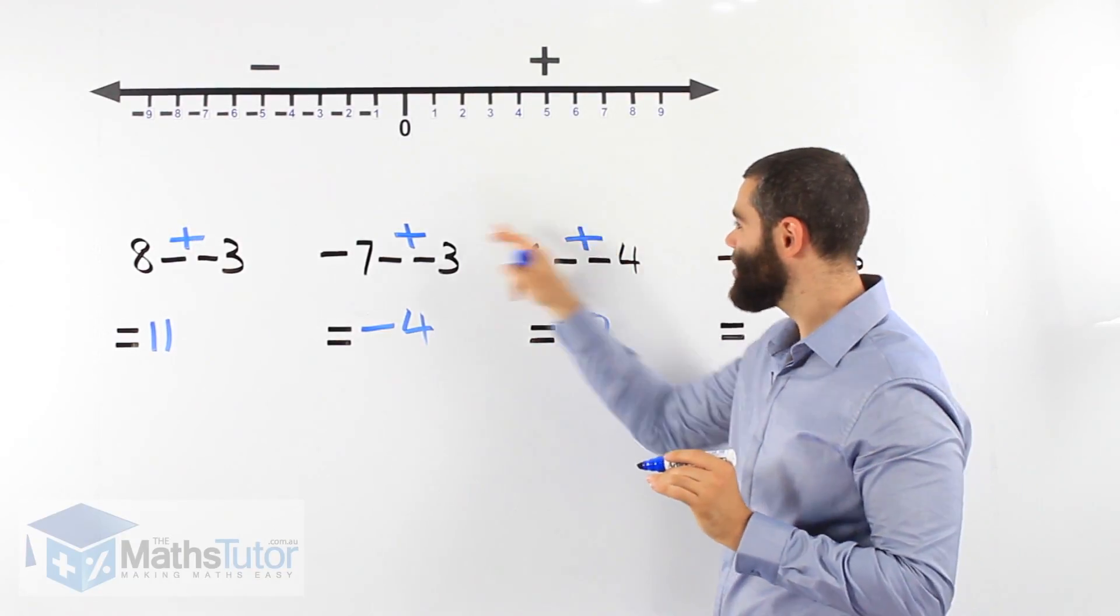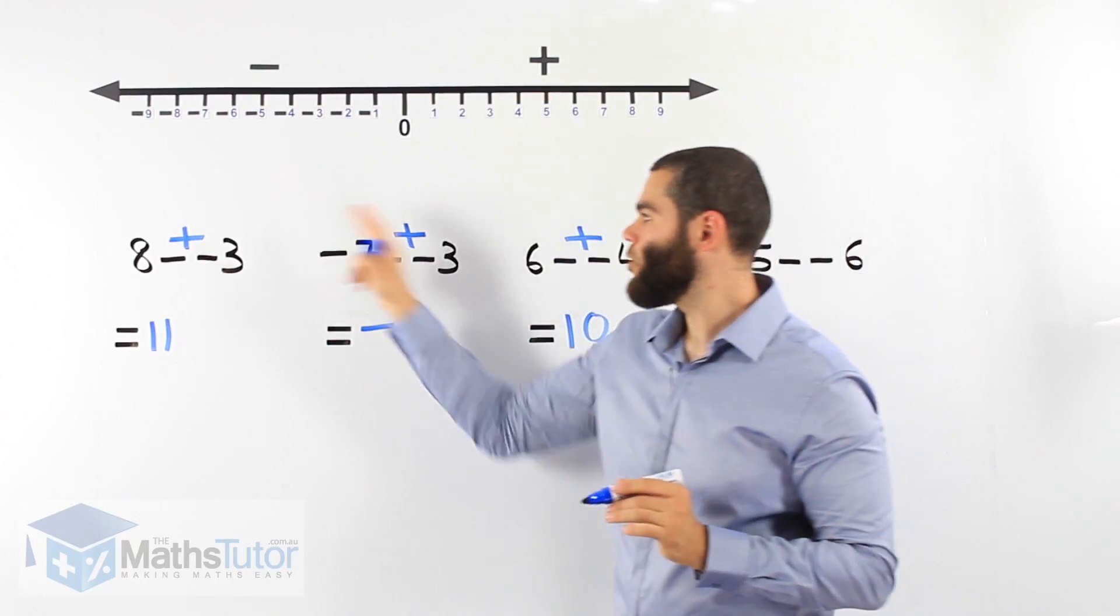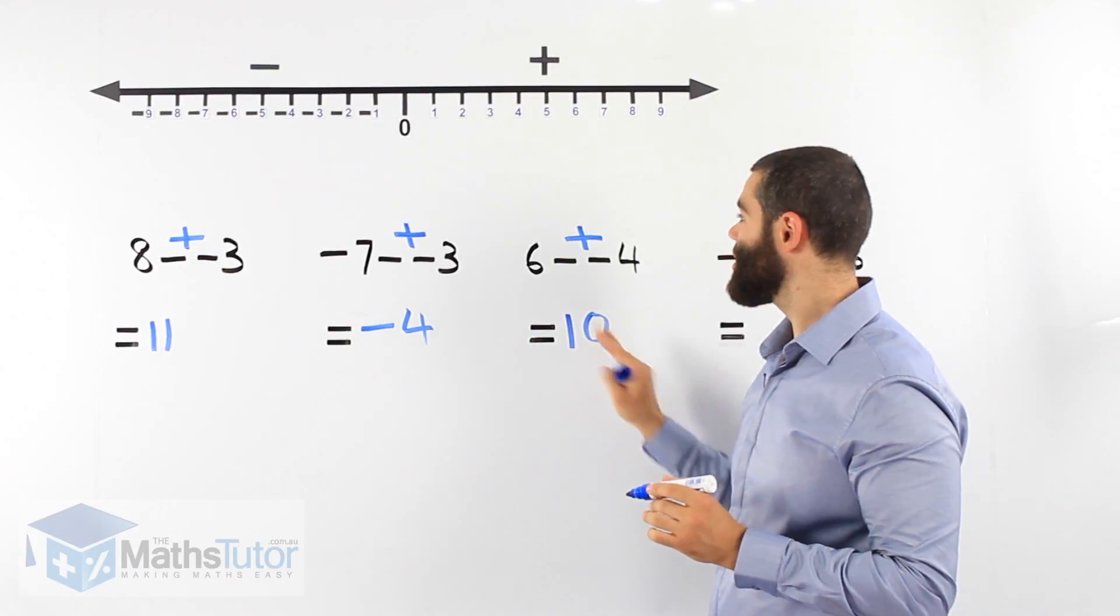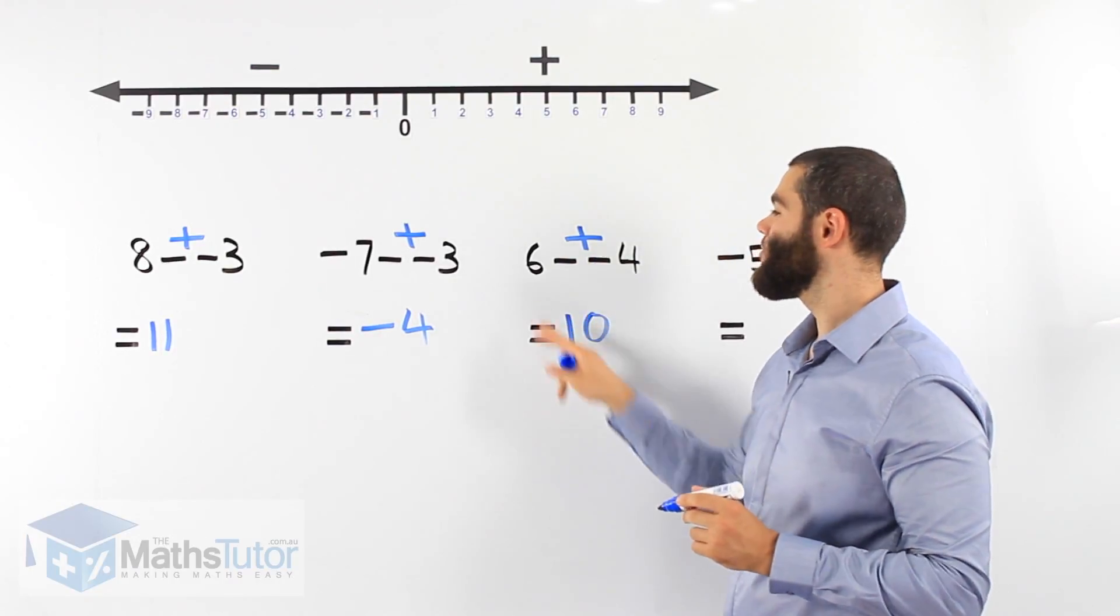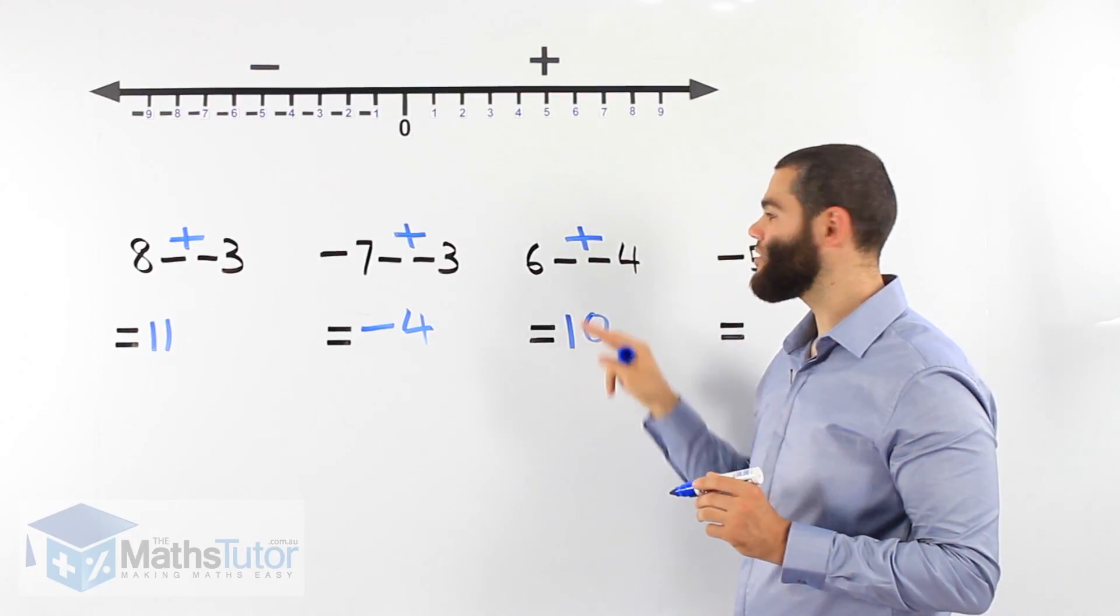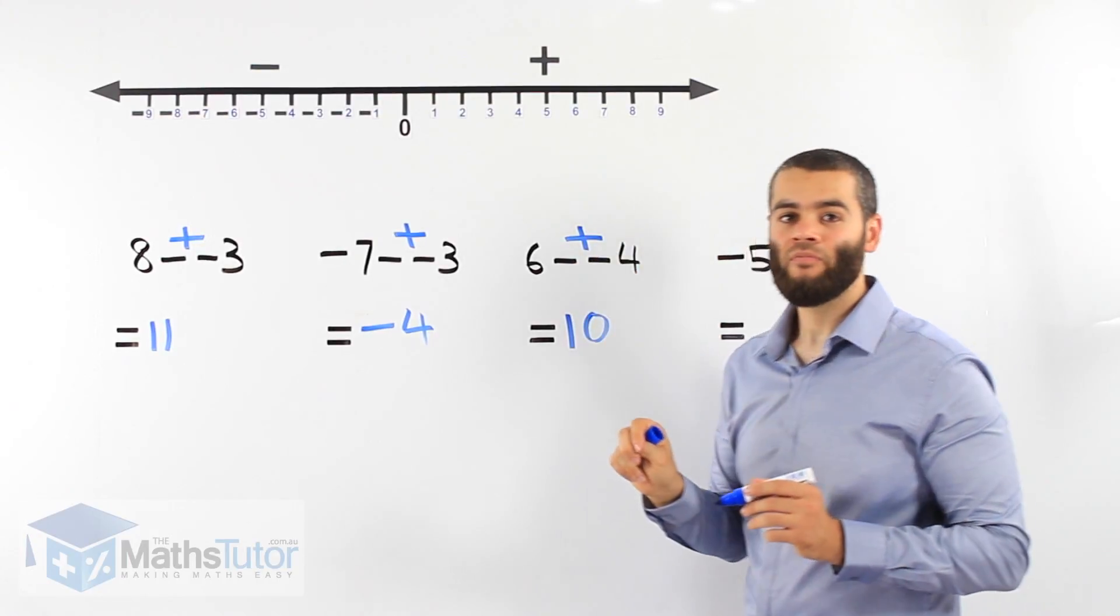Now notice how I always like to put the sign. Why? It helps me with my working out and it always shows my teachers I know what I'm doing. Two negatives, 6 plus 4 equals 10. I know straight away when two negatives are together they become a plus.